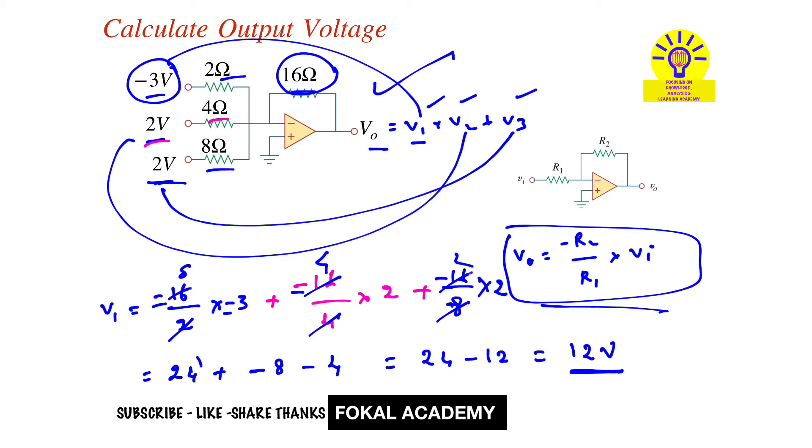This is the voltage contributed by the minus 3 volt source, this by the 2 volt source, and this by the 2 volt source. Totally the output voltage is 12 volts. This is the required output voltage for the given op-amp circuit. Thanks for watching, please subscribe, like, and share.